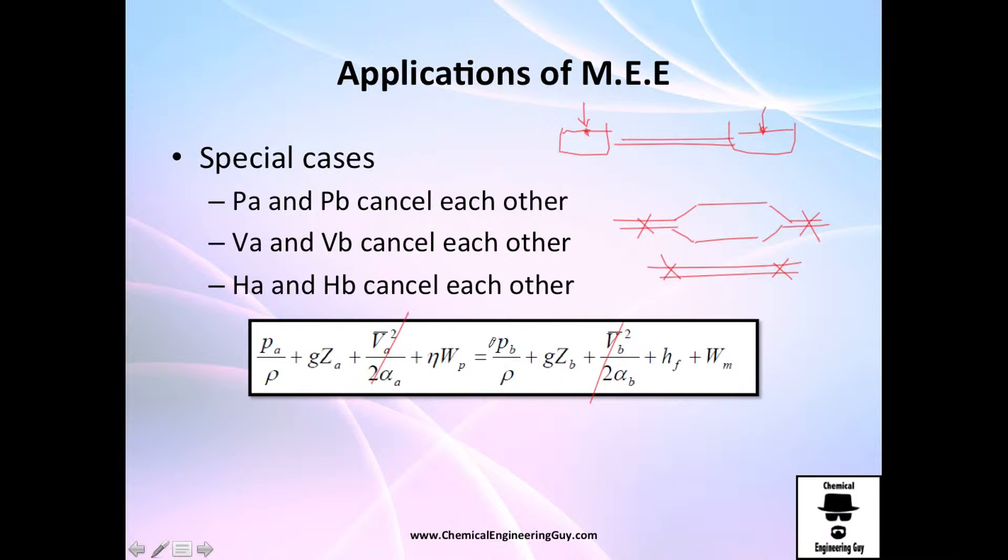So if you make a balance here equals b, the diameters are the same, therefore the velocities are the same. Velocity of a equals velocity of b. So if you make that to the square, well you're going to have exactly the same values and you can cancel each other.